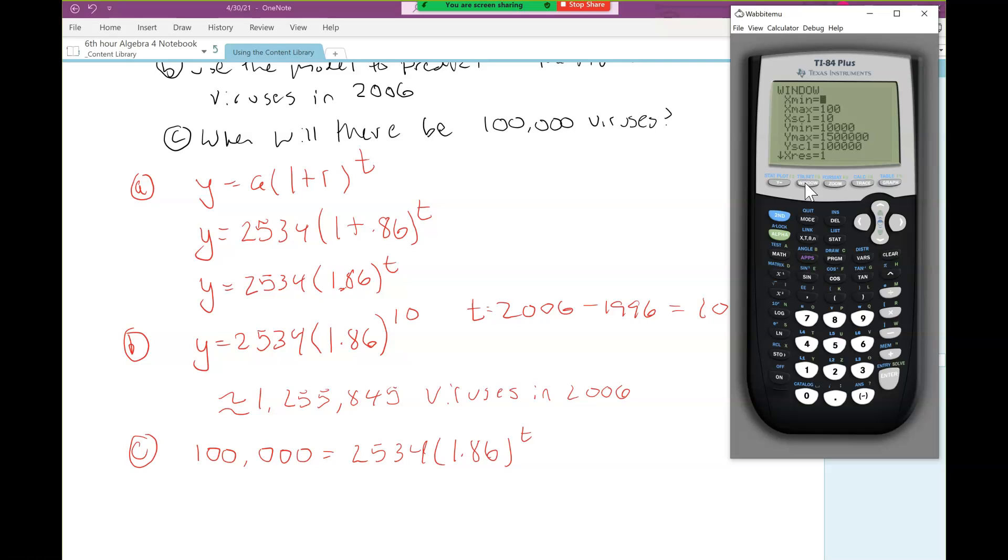Now I need to pick a window. The x variable is representing time. I know in 10 years there's going to be a million plus viruses, and I'm looking for 100,000 viruses. We started at 2,534. So definitely somewhere between 0 and 10 it had to be 100,000. I'm going to take x min to be 0 because you can't have negative time. And the max I'm going to do 10 because to get to a million we had to pass through 100,000.